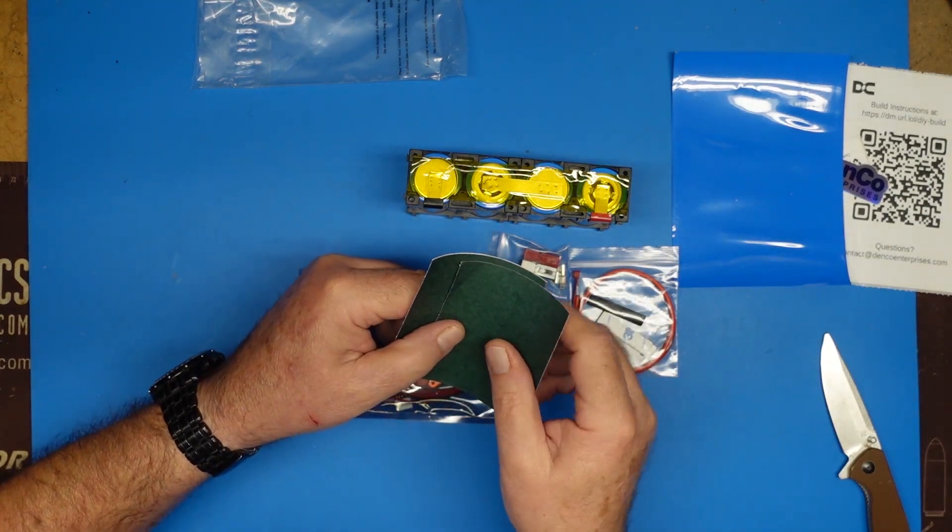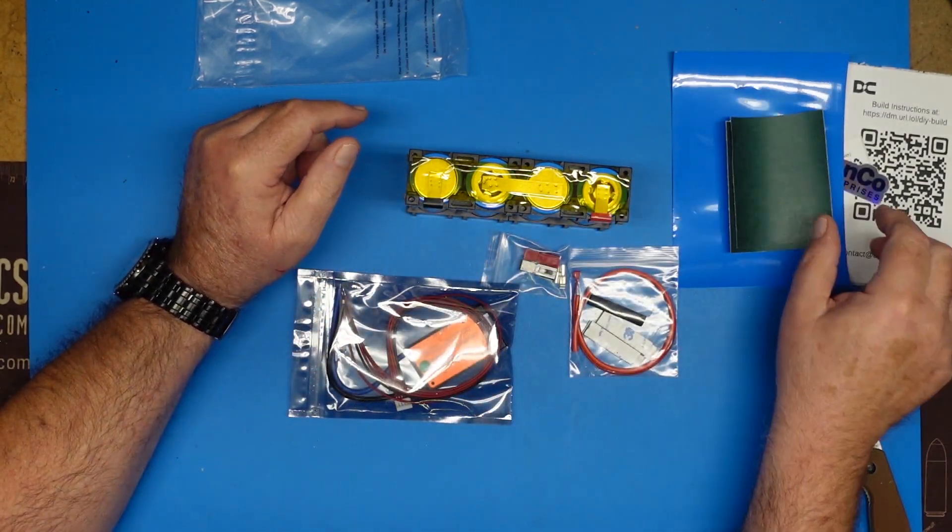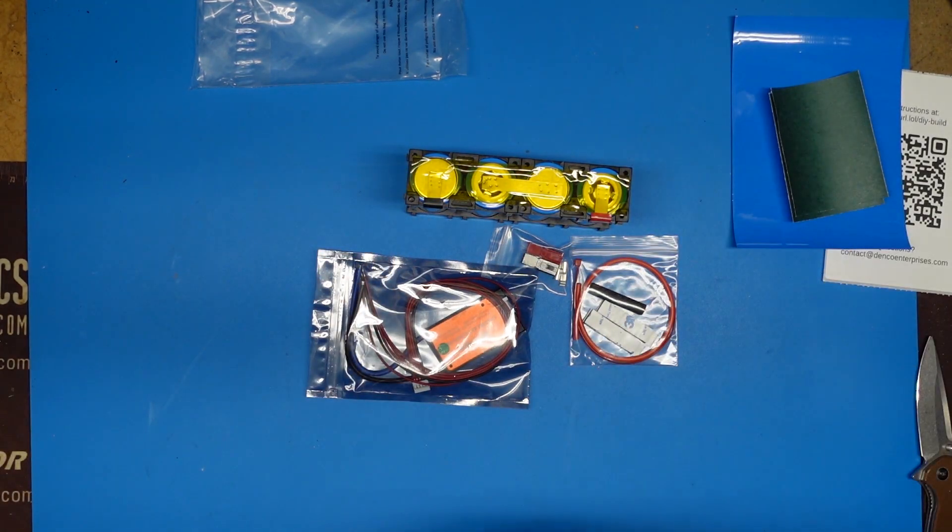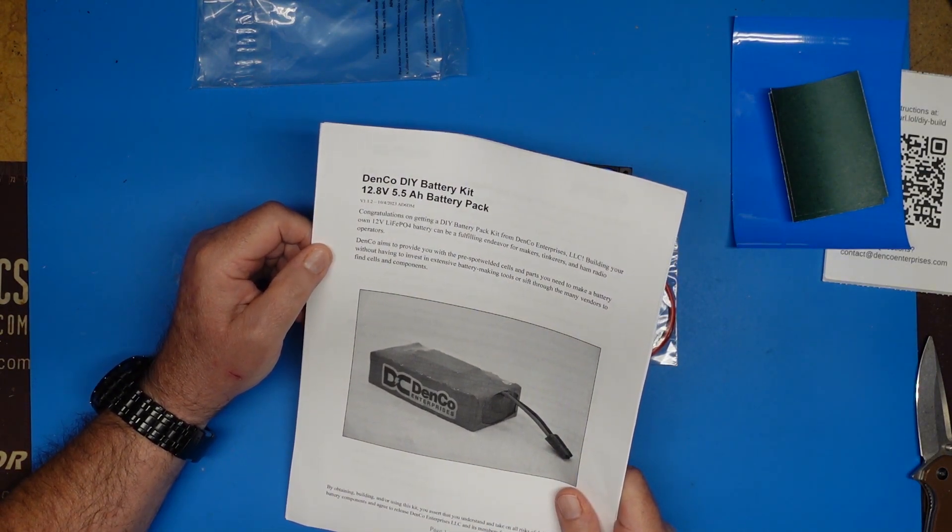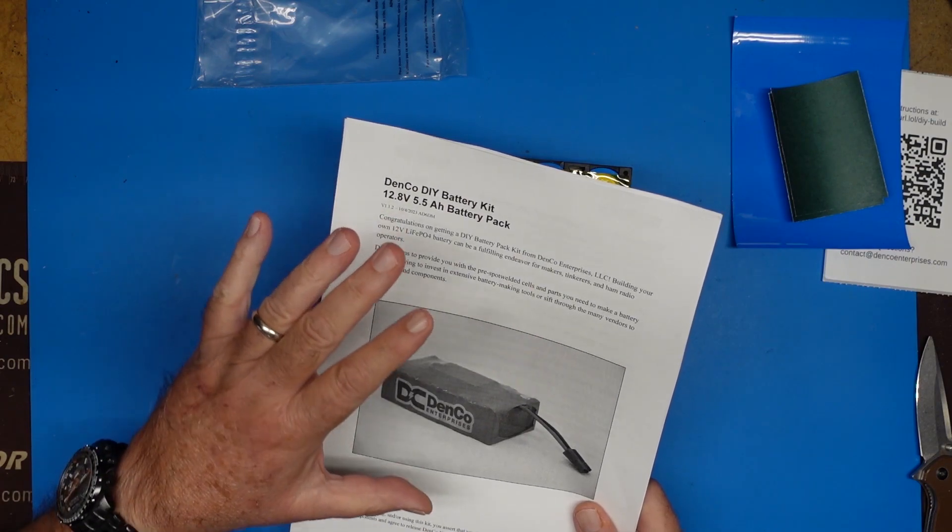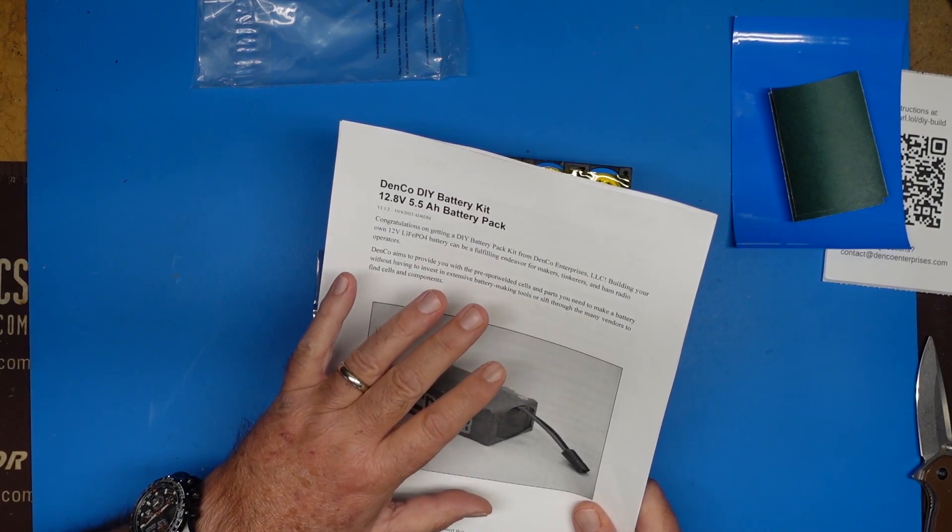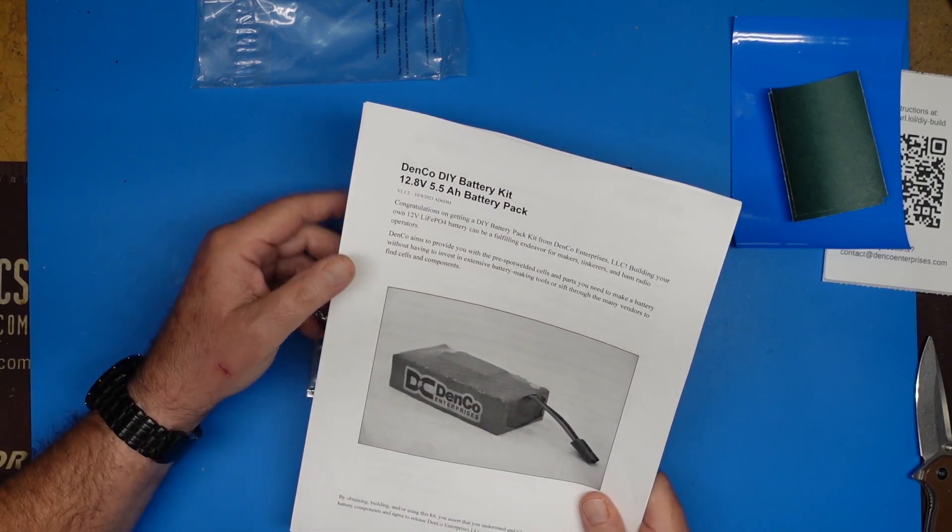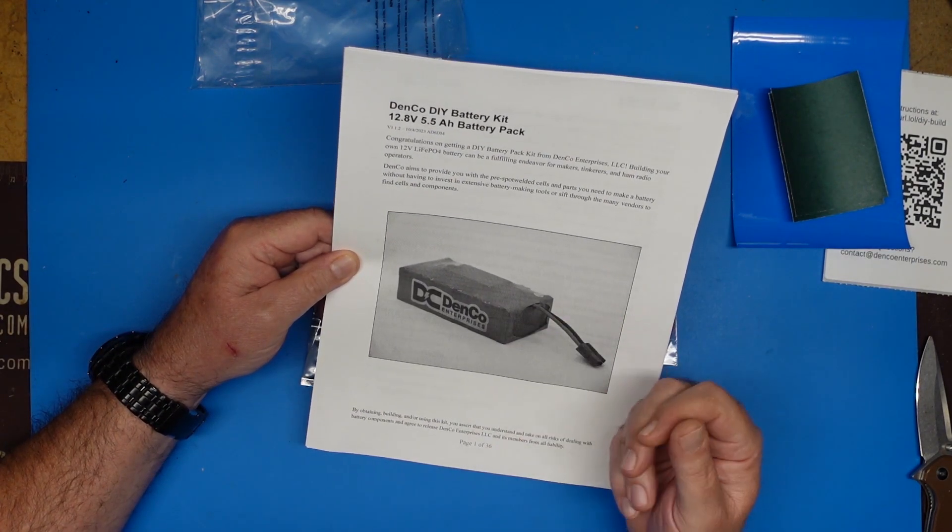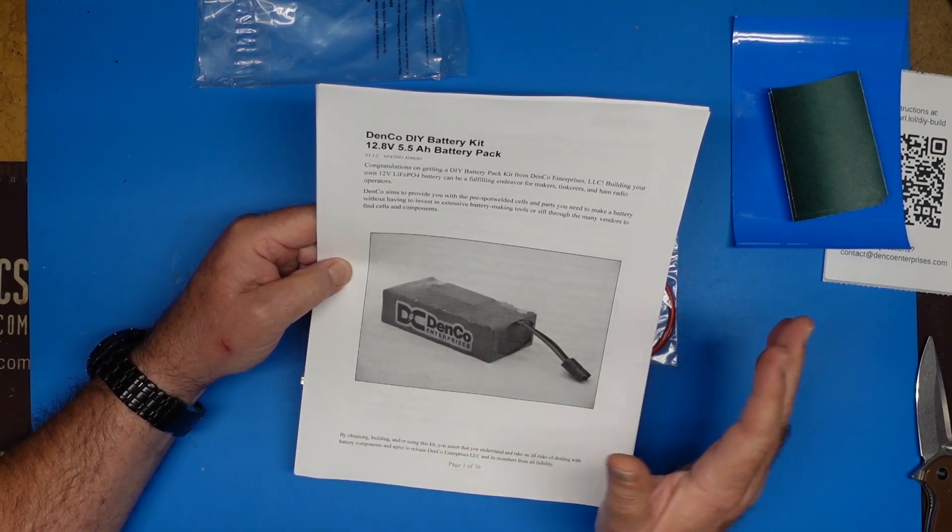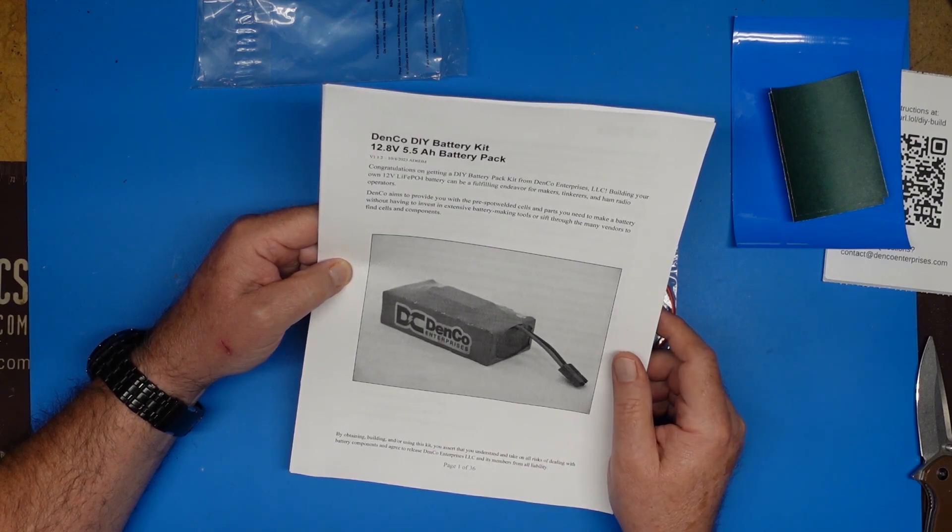Here's some other stickers that go over things to protect the leads so that nothing gets shorted out, that kind of thing. And then, of course, our instructions. And the instructions, as I said, we're going to go through those item by item and get this kit built and put together. We're going to read exactly what the instruction says for each step. We're going to do those steps in order. So at the end of this, we'll have a build video, and we'll know exactly how this kit is put together. And if you've been around amateur radio and YouTube for a while, you know this battery building is Dennis' thing. So I have a lot of confidence that this is going to work out to be a great little battery kit.